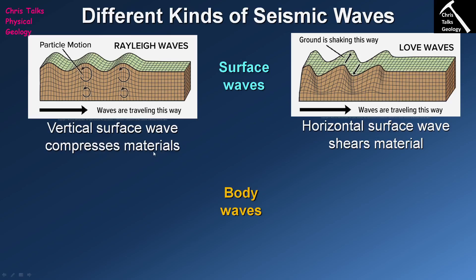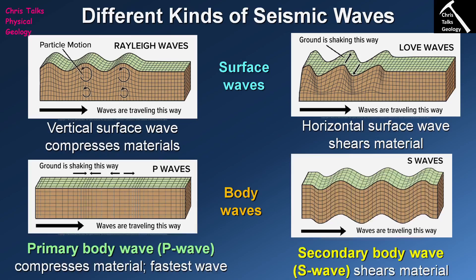The other type of waves are referred to as body waves — they're called body waves because they move through the body of the Earth. They aren't limited to the Earth's surface; they travel all the way through the Earth's interior. Body waves are split into two groups: primary body waves, referred to as P waves, and secondary body waves, referred to as S waves.